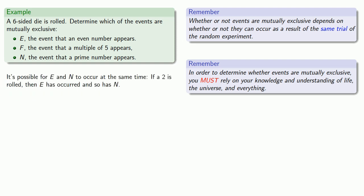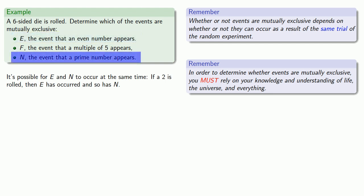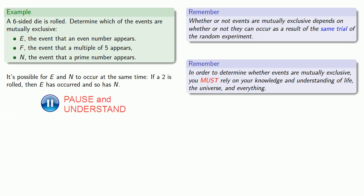It's possible for E, an even number, and N, a prime number, to occur at the same time. If a two is rolled, then E has occurred because two is an even number, and so has N because two is prime. So that means E and N are not mutually exclusive.